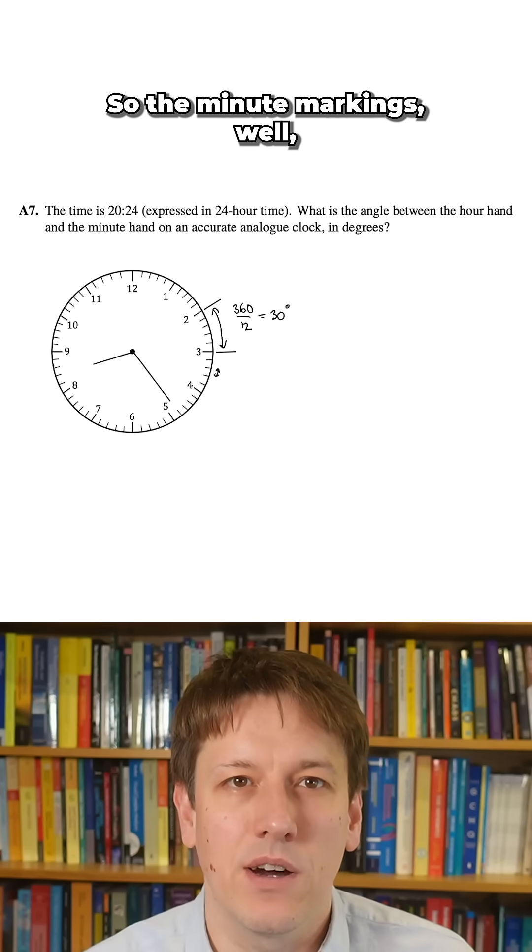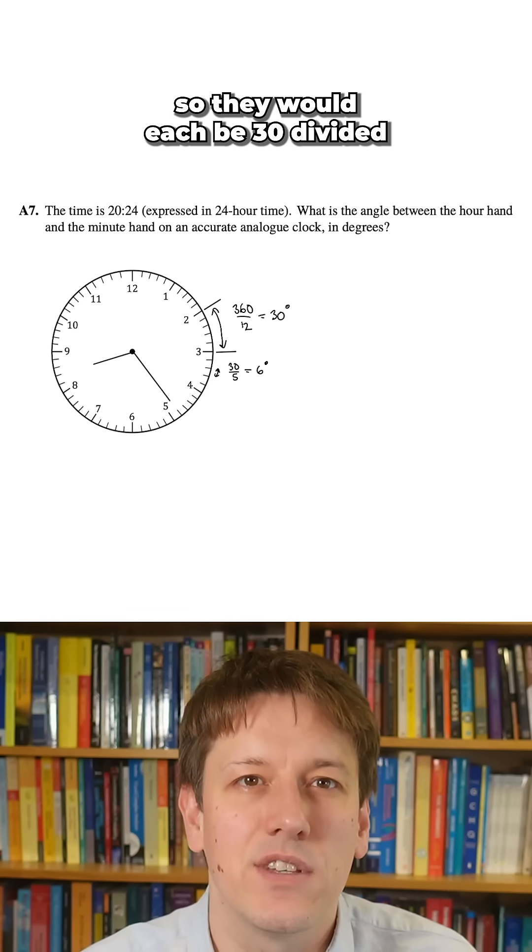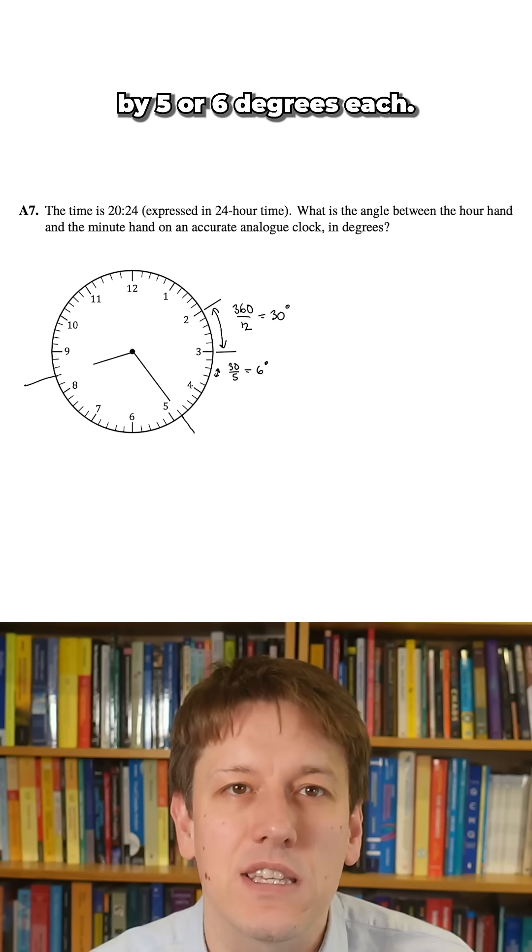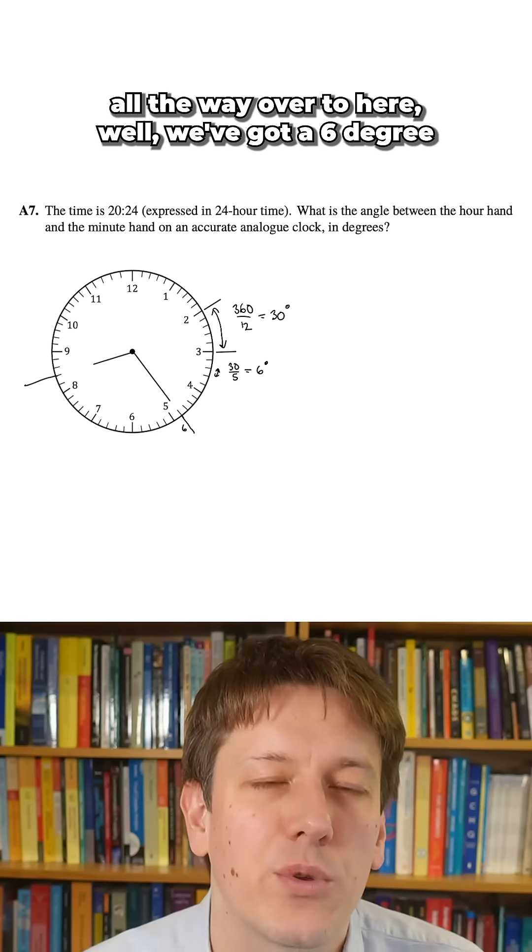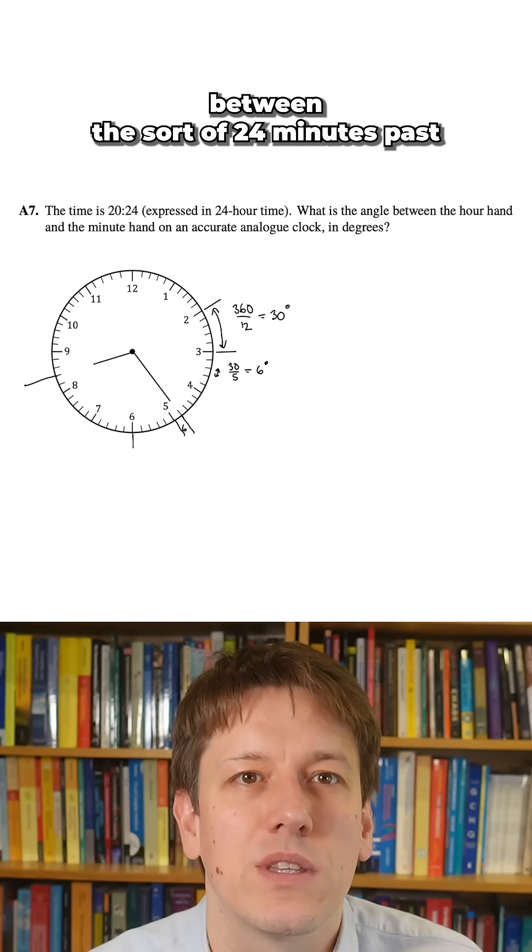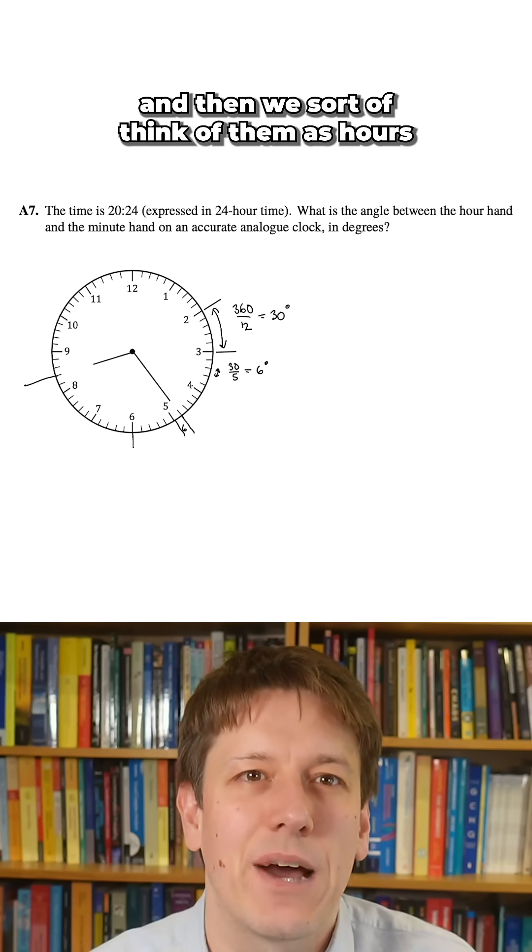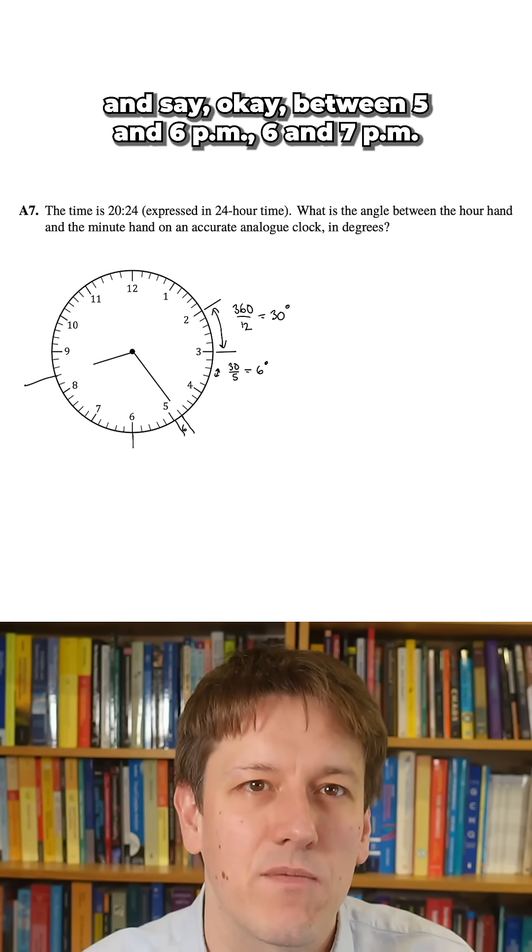So the minute markings, well there's five of those between each of the hour markings, so they would each be 30 divided by 5 or 6 degrees each. So if I wanted to go from here all the way over to here, well we've got a 6 degree angle here between the 24 minutes past and the 25 minutes past, and then we think of them as hours between 5 and 6pm, 6 and 7pm, and so on.